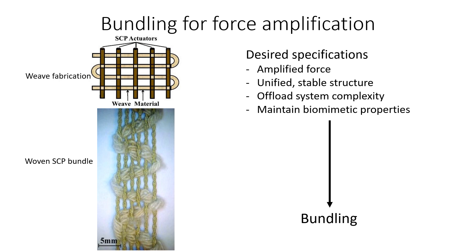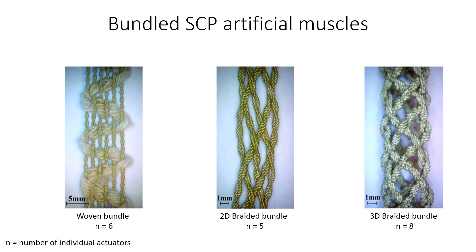For example, we designed and fabricated woven bundles, which are made by weaving a secondary material over and under parallel-placed individual actuators. Two other braided bundle designs were included in the comparison study. Many bundles of each configuration were fabricated for testing, each with a different number of individual actuators.